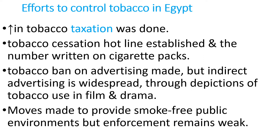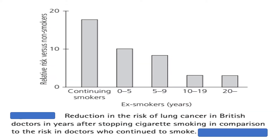Efforts to control tobacco in Egypt include: increase in tobacco taxation, a tobacco cessation hotline established with the number written on cigarette packs, a tobacco ban on advertising — though indirect advertising through film and drama remains widespread — and moves to provide smoke-free public environments, but enforcement remains weak. A graph shows reduction in lung cancer risk in British doctors years after stopping cigarette smoking compared to those who continue.